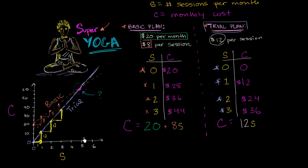Let's think about it a little bit. How much do each of the plans cost if I only attend one session? From the trial plan, it'll cost us $12, while on the basic plan, if I only attend one session, it'll cost us $28. You can see this visually. At one session, the trial plan is below the basic plan. At two sessions, the trial plan is still below the basic plan, although they're not as far apart.